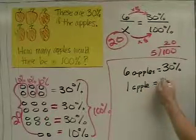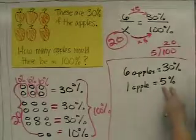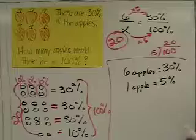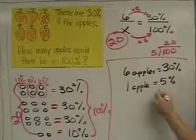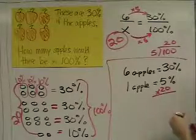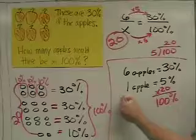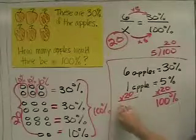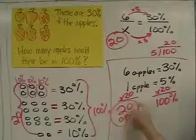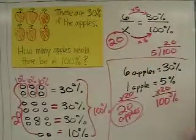But we don't want 5%, we want how many apples are in 100%. So, we can do 5 times 20, which equals 100%. So, 1 times 20 is equal to 20 apples. So, you've got three different ways to solve this one problem.